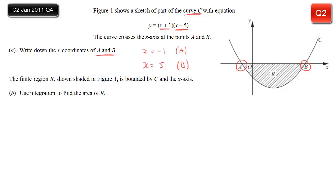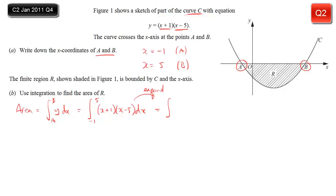Part B wants the area R enclosed by the curve C and the x-axis. To find the area we integrate between points A and B, so the limits are minus 1 and 5, integrating x plus 1 times x minus 5 with respect to x. We can't integrate the product of brackets, so we expand: x squared, then minus 5x plus x gives minus 4x, and 1 times minus 5 is minus 5. We integrate that: x squared becomes x cubed over 3, x becomes x squared over 2, and 5 becomes 5x, evaluated between minus 1 and 5.